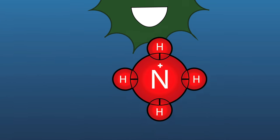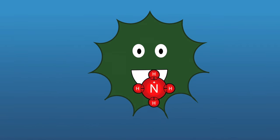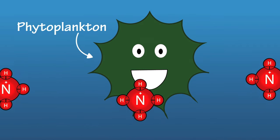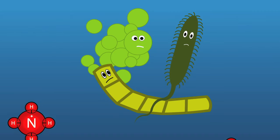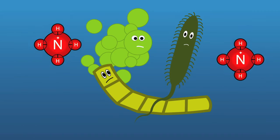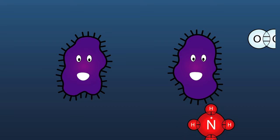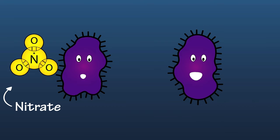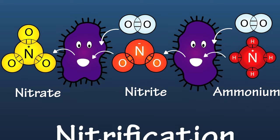This ammonium can be taken up by some species of microscopic plants, called phytoplankton. For those who can't use the nitrogen and ammonium, bacteria take the ammonium and add oxygen, creating first nitrite and then nitrate in a process called nitrification.